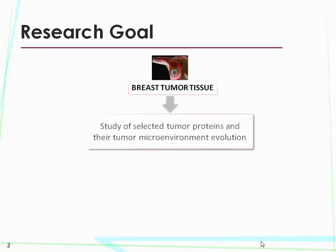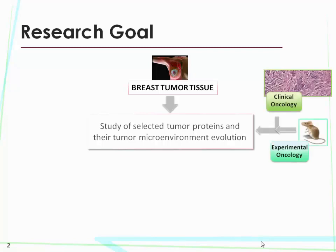What we would like to do is to study the tumor tissue. In particular, we want to study and detect a population of tumor proteins and to follow their evolution into the tumor landscape. We collaborate with the clinical and experimental oncology and they are very interested in understanding how these tumor proteins are changing in relation to the proliferation of tumor cells.